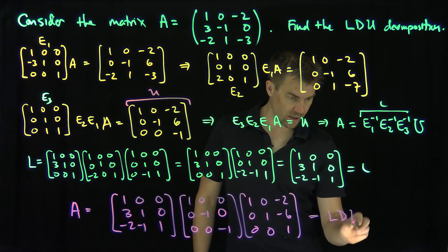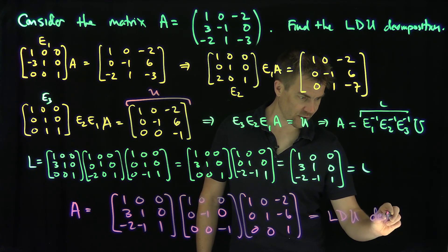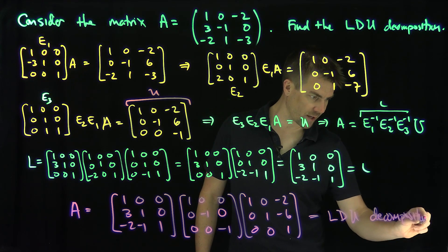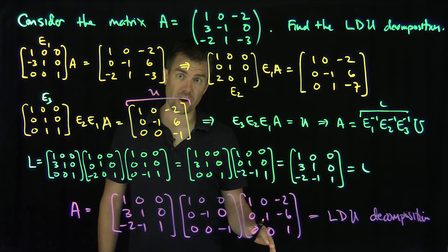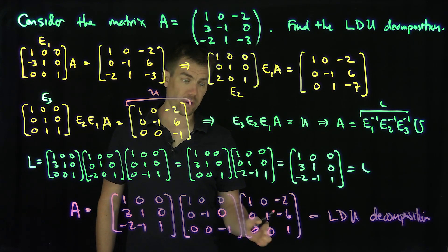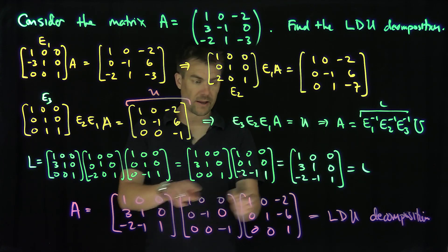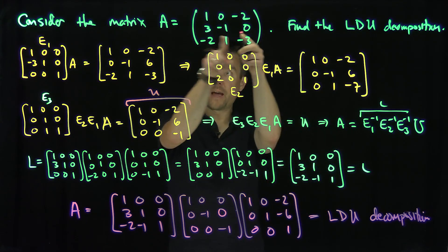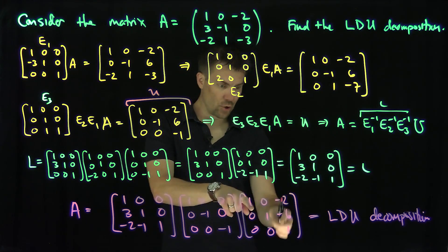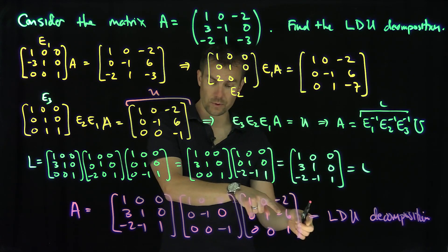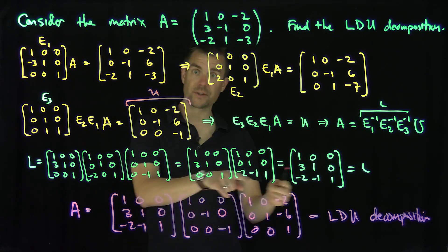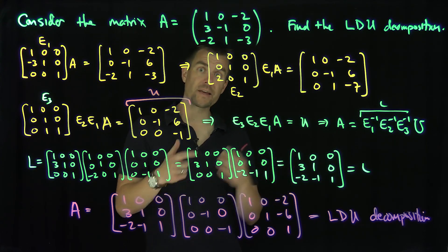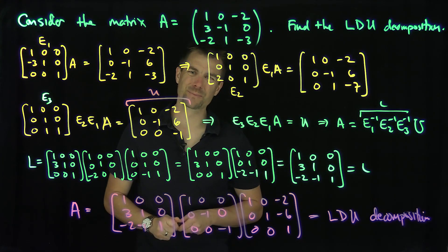This LDU decomposition is very useful when solving systems of equations because it cuts down the total number of operations. If Ax equals b, you can write U applied to x equals y, and L applied to y equals b, and solve these systems much more quickly. Thank you very much.